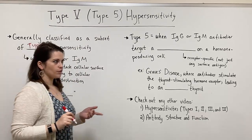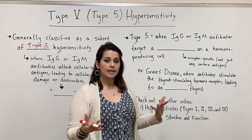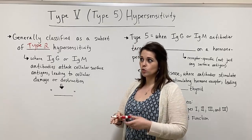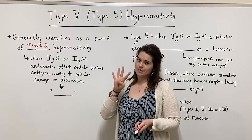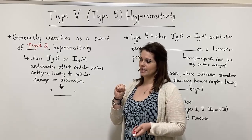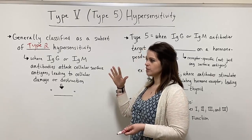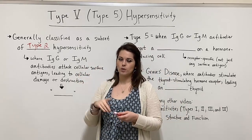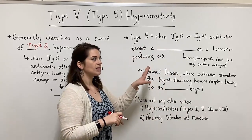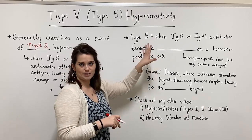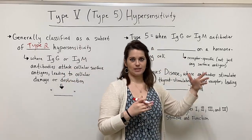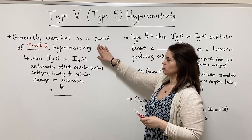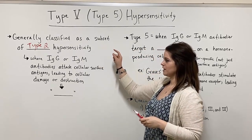And so that's why if you go and look at, say, the Wikipedia page or various textbooks, there's a good chance you're just going to see four types of hypersensitivities listed. But I'm going to use this video to tell you the distinction between type 5 and type 2 and why some experts do have type 5 as a hypersensitivity classification on its own. But really quick, let's just review what the type 2 hypersensitivity is.